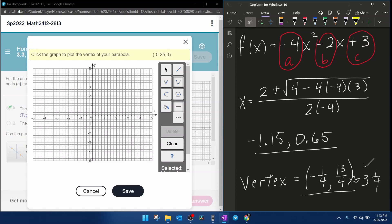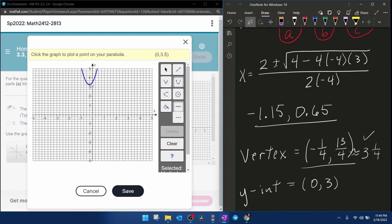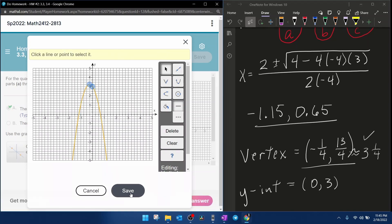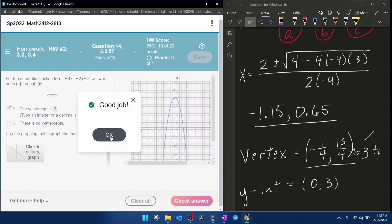So we need to be at negative 0.25 and up at 3.25. That's to nail down the vertex. And then to get another point on the graph, the easiest point I can think of would be the y-intercept that we've already found. All right, so all we need to do then is go to where the y-intercept is 3 and click, save, and we got the graph.